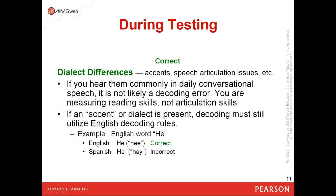If the student has a dialect difference, such as an accent or speech articulation issue, and you hear it commonly in daily conversational speech with that student, it's not likely to be a decoding error when you hear it as they're reading. You're measuring reading skills, not articulation skills. In other cases, if a student has an accent or a dialect present, decoding must still utilize English decoding rules. For example, if you have a student whose native language is Spanish, he or she might pronounce the English word 'he' as 'hey,' which is correct in Spanish but not for English. So if you're administering and scoring an English measure, 'he' (h-e) would need to be pronounced as 'he,' not 'hey.' That would be incorrect. Otherwise, any other dialect difference, accent, or speech articulation issue would not be penalized.